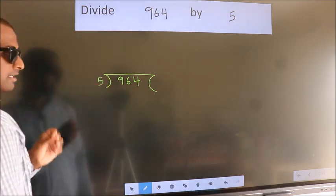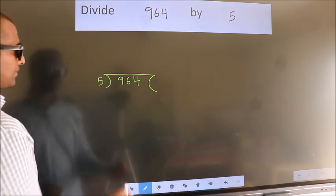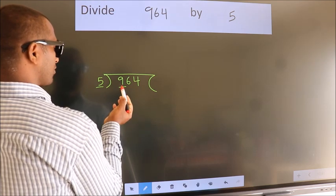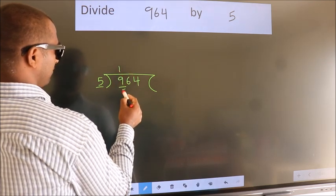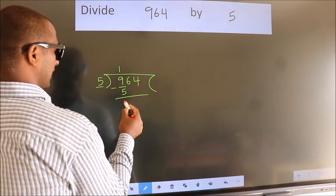This is your step 1. Next, here we have 9, here 5. A number close to 9 in 5 table is 5 once 5. Now we should subtract. We get 4.